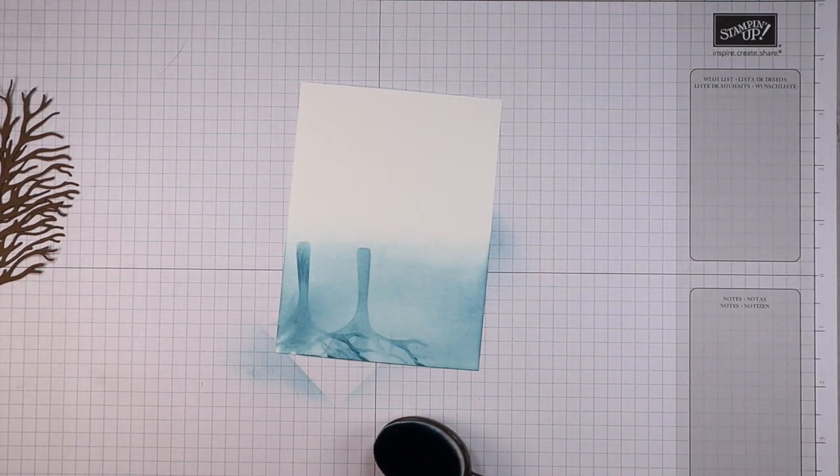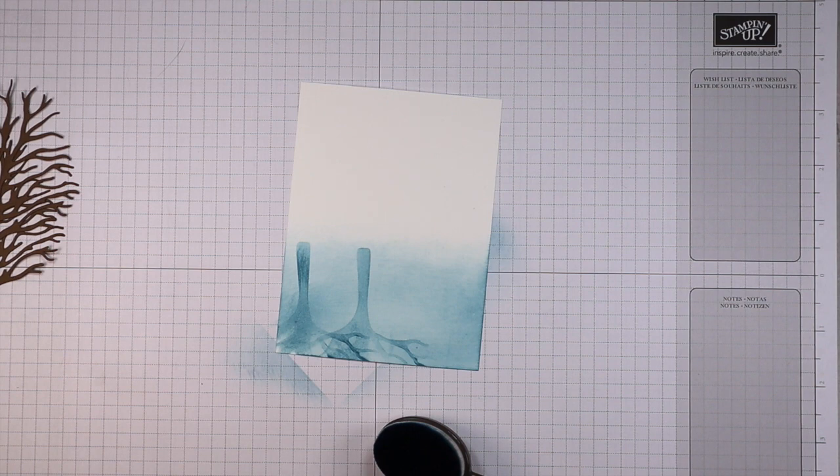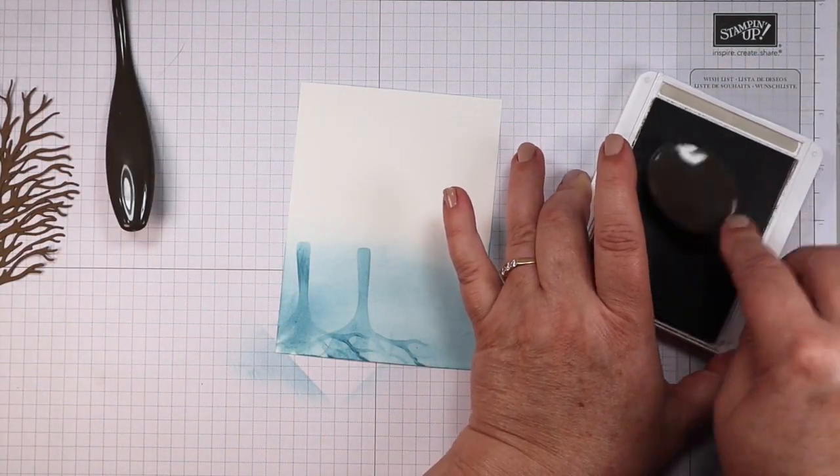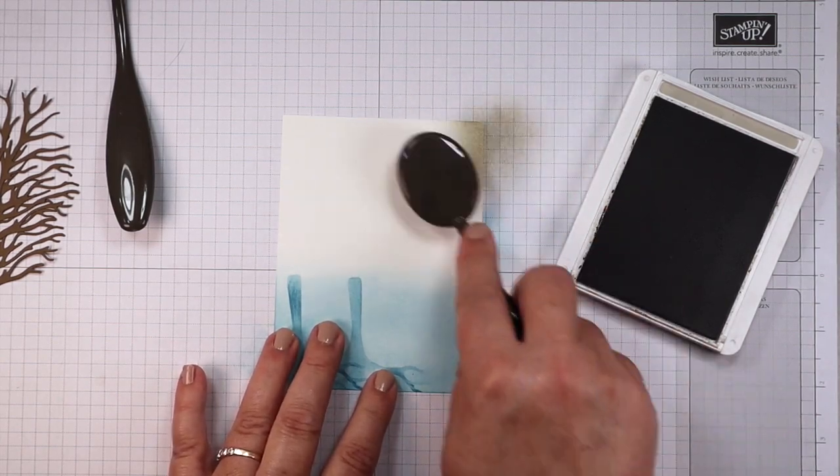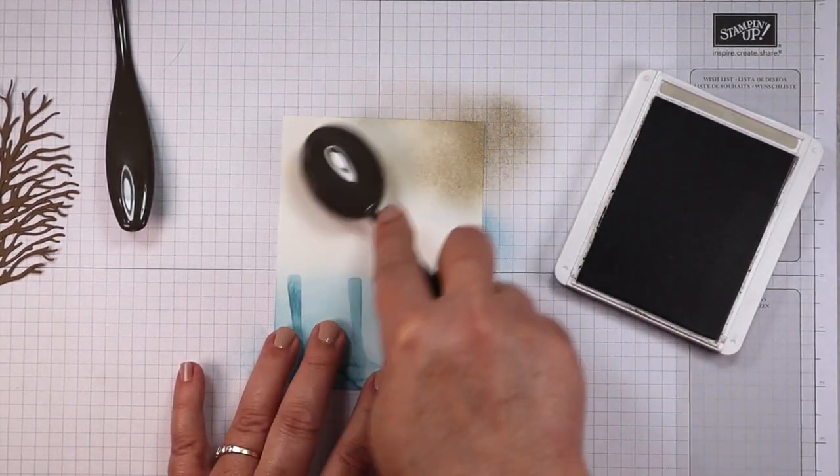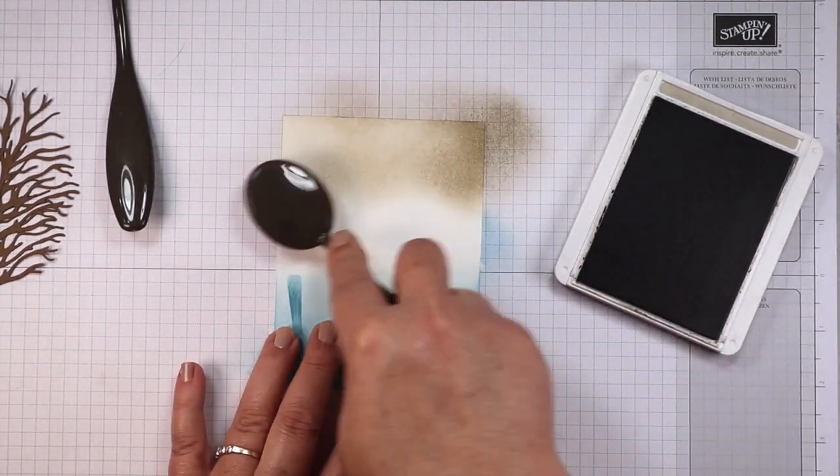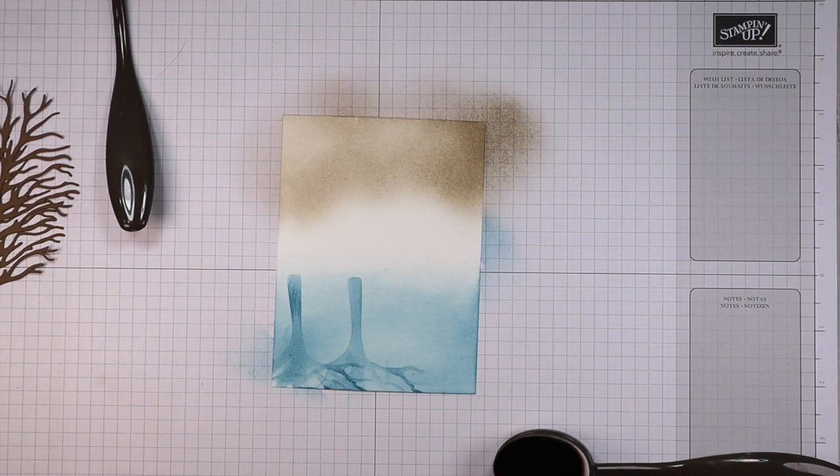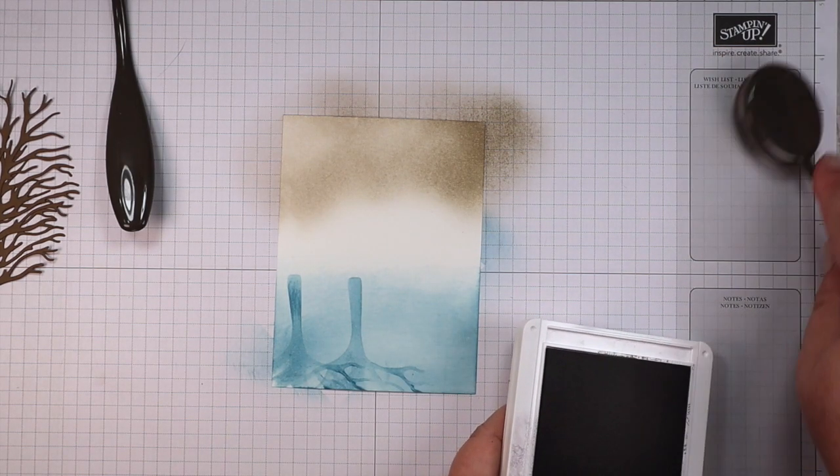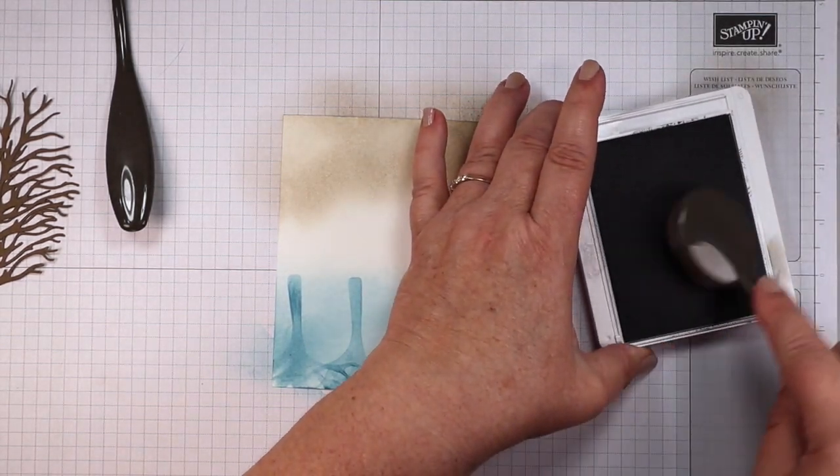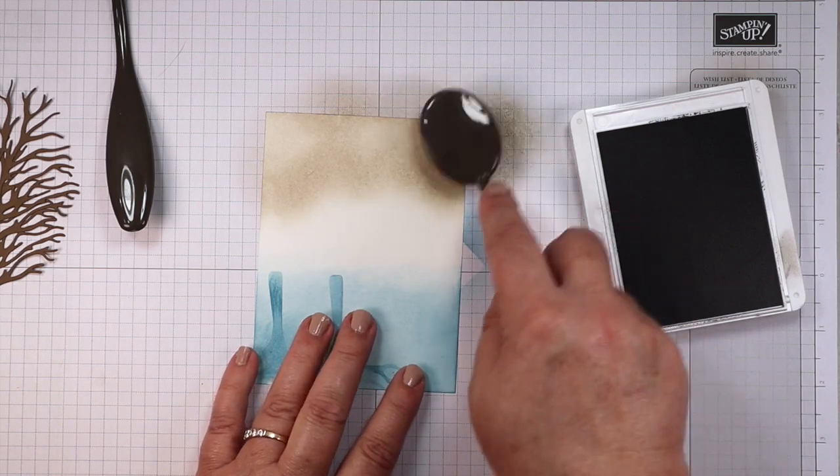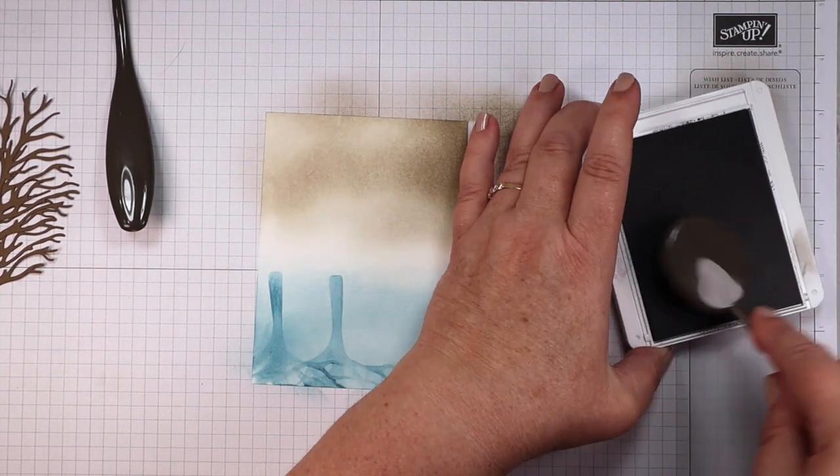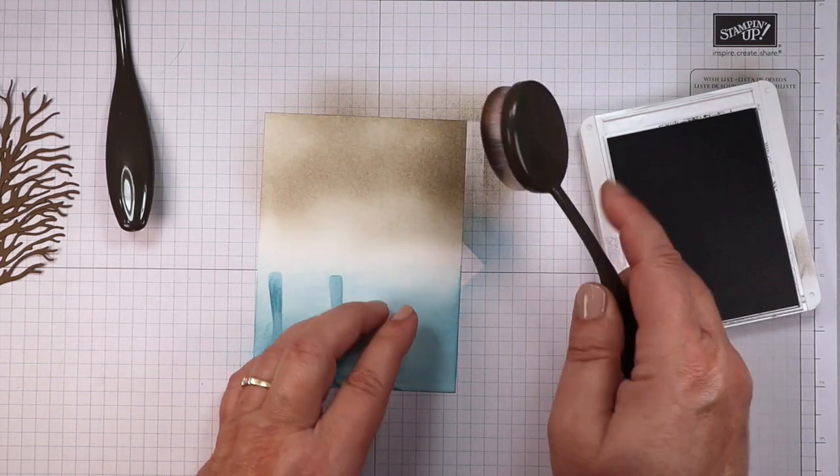Okay, so now we're going to put Sahara sand up in the sky area. There's my Sahara sand. Next I'm going to pull in some gray. I'm going to stay with the same blending brush, I'm going to just clean it off a bit. I'm going to come down a little further with the gray. I'm going over the Sahara sand but I'm leaving quite a bit of white here.